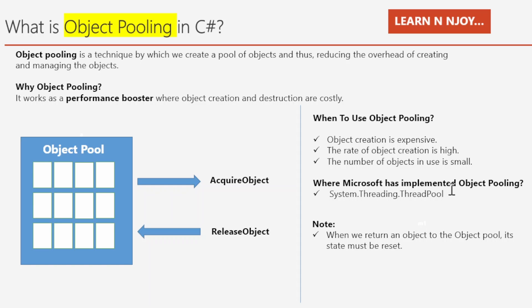One thing to keep in mind when using object pooling: when we return an object to the object pool, its state must be reset. The object pool's responsibility is to reset the state of that particular object.